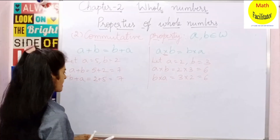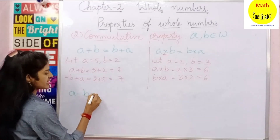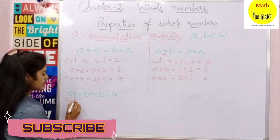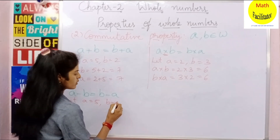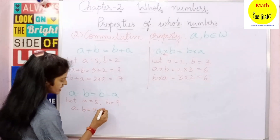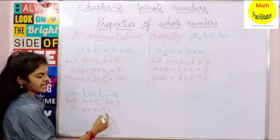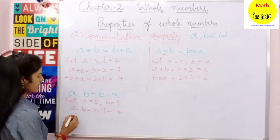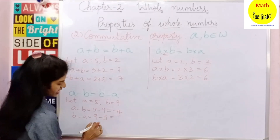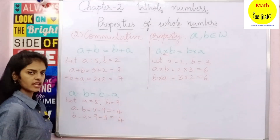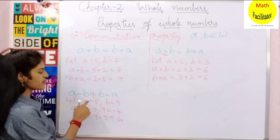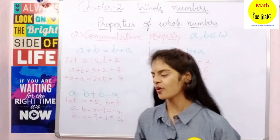Let us check for subtraction. It should be A minus B equal to B minus A. Let A equal to 5 and B equal to 9. A minus B is 5 minus 9, which is minus 4. B minus A is 9 minus 5, which is 4. You can see that 4 is not equal to minus 4. So A minus B is not equal to B minus A.